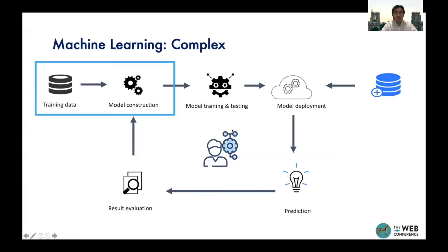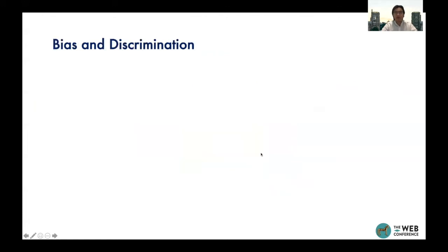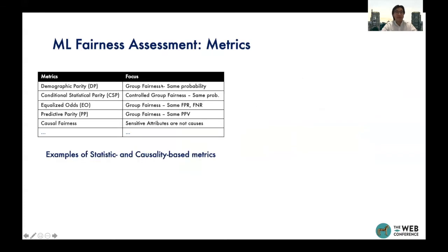As we saw in previous slides, machine learning involves many interdependent steps, and bias may occur at any time and anywhere. Moreover, the way we define bias and discrimination is continuously evolving. The research community has proposed many different metrics to detect and quantify bias — from group-level metrics that isolate the probability of predicting from sensitive features statistically, to work that tries to block the path from sensitive attributes to outcomes such that sensitive attributes are not the causes of the final prediction results.